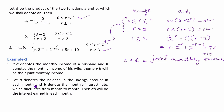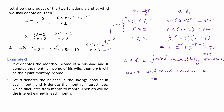Let a denote the balance in the savings account each month and b denote the monthly interest rate, which fluctuates from month to month. Then a into b will be the interest earned in each month. So a times b equals balance into interest rate, giving us the interest. This example shows how numeric functions can be used to find the sum and product and what these mean in real life. Thank you.